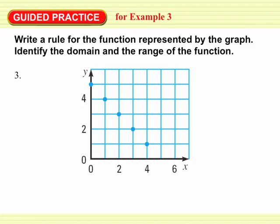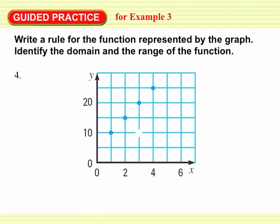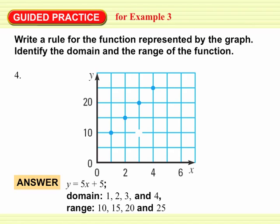Here's a different function where the points are heading downhill. Going through the same process of creating a table and looking for patterns, we find that the y coordinate equals 5 minus the x coordinate — so as x gets bigger, y gets smaller. The domain and range are simply the x coordinates and y coordinates of those points. Once we get into chapters 4 and 5, we'll learn better strategies for finding rules; right now you're sort of guessing and checking.